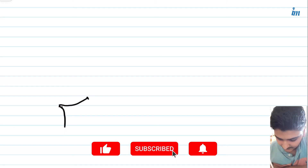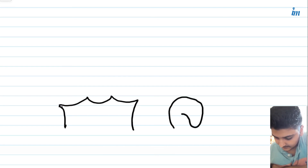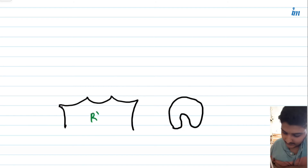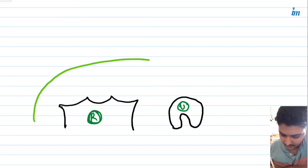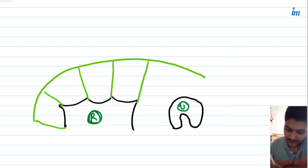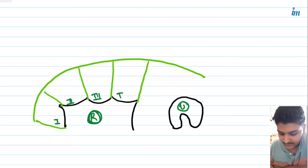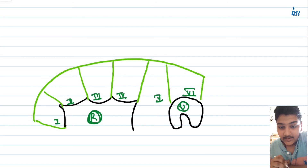Visualizing this: here is the radius and here is the ulna, with the extensor retinaculum over them. It is divided into six compartments — compartments one, two, three, and four are on the radius, while compartment five and compartment six are on the ulna.